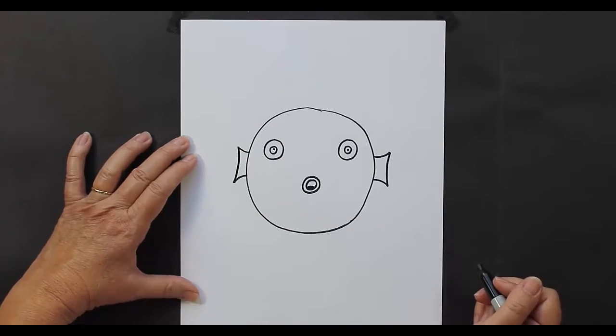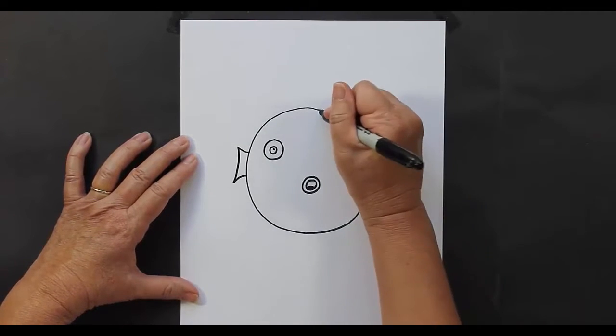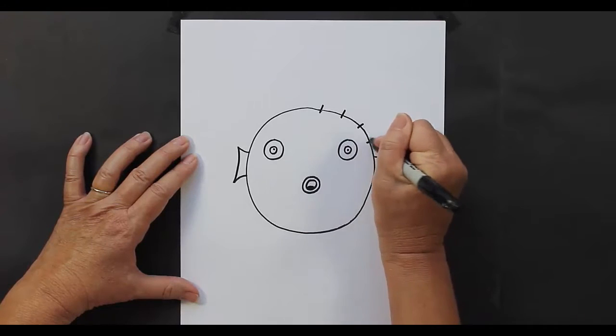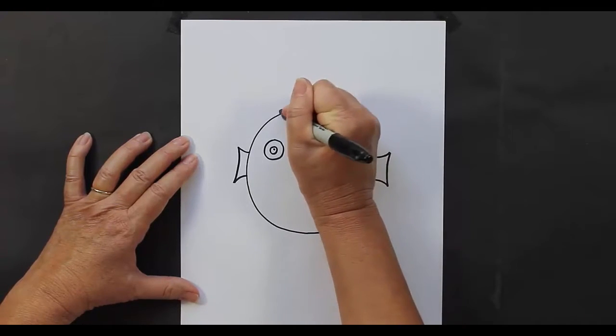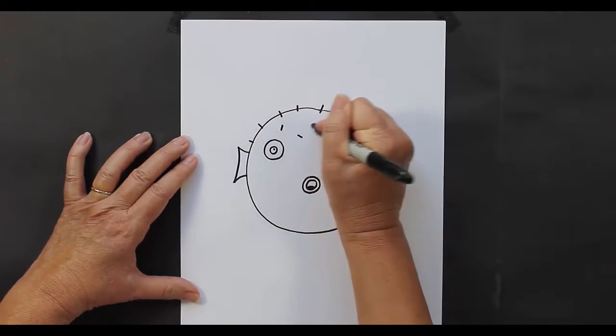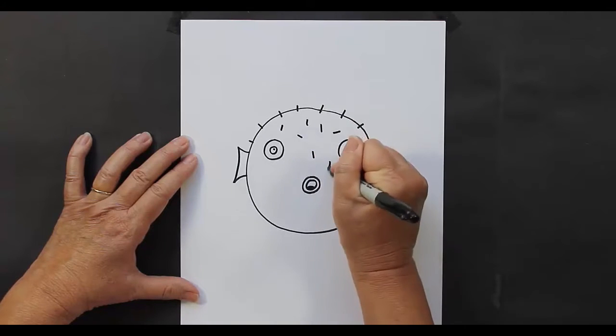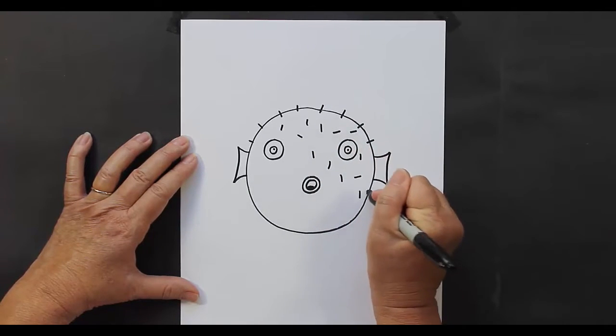Now what he needs to make him a puffer fish is he needs to have his spikes. So all over his body, going different ways, you can start making his spines.